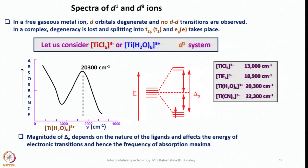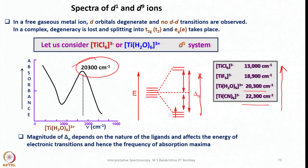The Eg consists of dx²−y² and dz² orbitals. Let us consider a D¹ system such as hexachlorotitanate³⁻ or hexa aqua titanium³⁺. The absorption maxima values for titanium in the +3 state with different ligands are given. Recalling the spectrochemical series, in increasing order of ligand field strength: hexachlorotitanate³⁻ shows λmax at 13,000 cm⁻¹, fluoride at 18,900, hexa aqua titanium at 20,300, and hexacyanotitanate³⁻ at 22,300. The gap is steadily increasing.